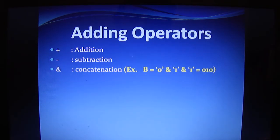Next is the adding operators. Plus is for addition, minus is for subtraction and the ampersand symbol is for concatenation. That means if you are using concatenation operator, it will join all the bits. As shown in the example, if you are writing B is equal to 0 & 1 & 1, it will give 010.